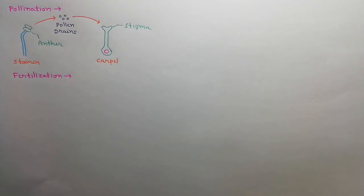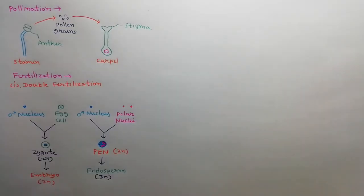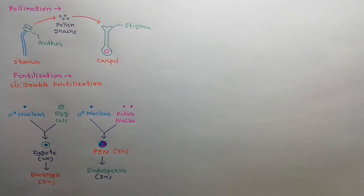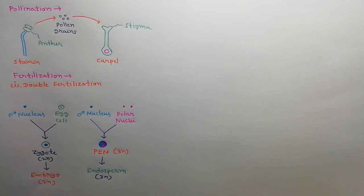In crop plants, fertilization has two specific features. The first feature is double fertilization. The pollen grain contains two male nuclei. One male nucleus fuses with the egg cell to produce a diploid zygote, which further develops into a diploid embryo. The second male nucleus fuses with two polar nuclei to produce a triploid primary endosperm nucleus (PEN), which further develops into a triploid endosperm to provide nourishment to the developing embryo.